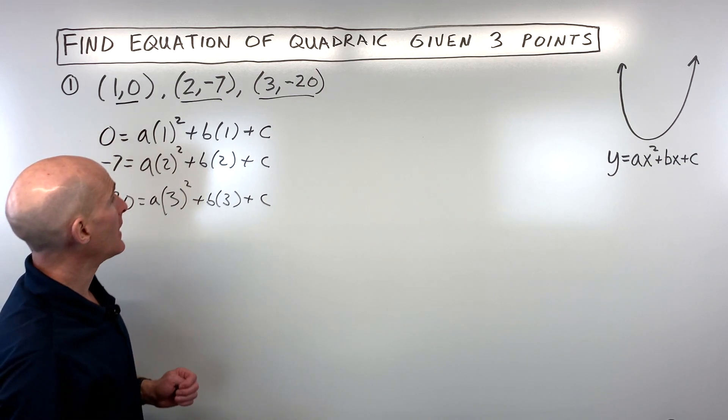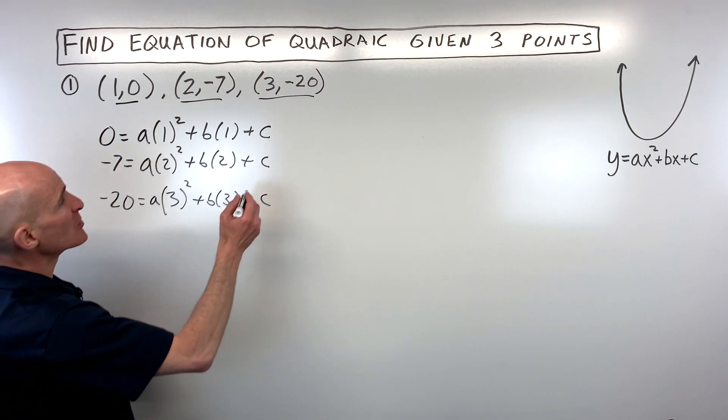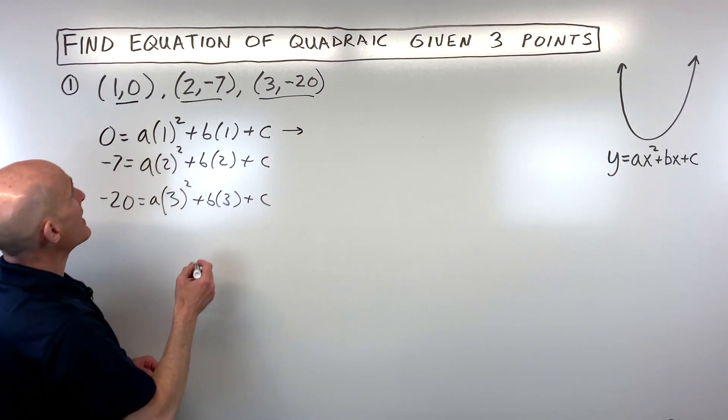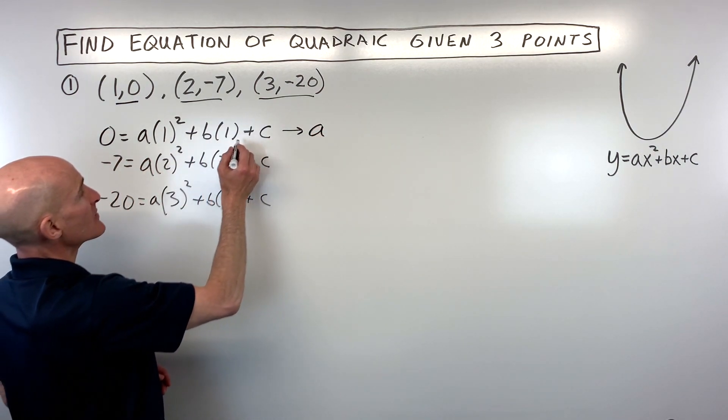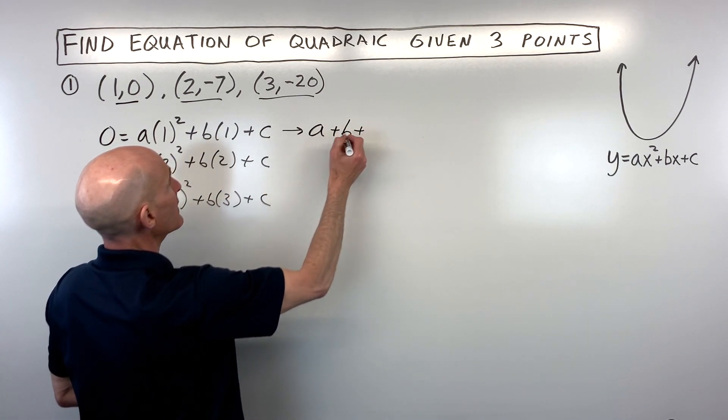So these are our three equations and we want to solve this system. Now first thing I'm going to do is kind of simplify this down a little bit. So one squared is one. So this is just going to be a, b times one is b, and c.